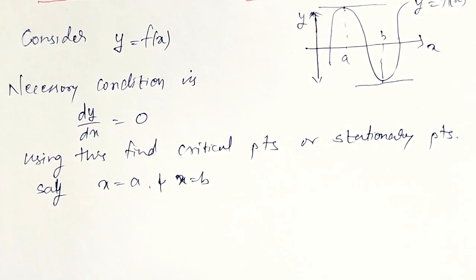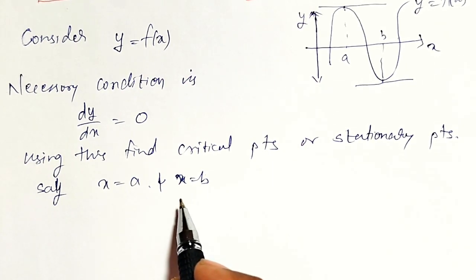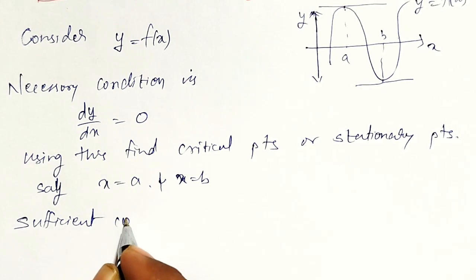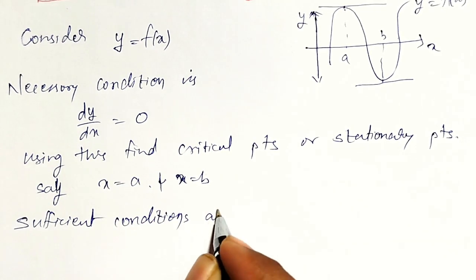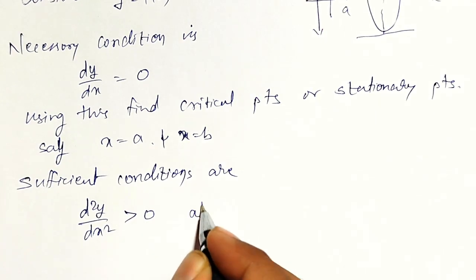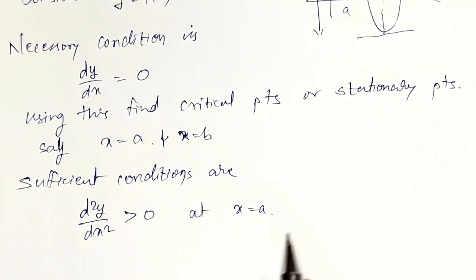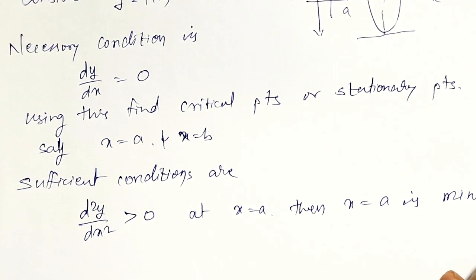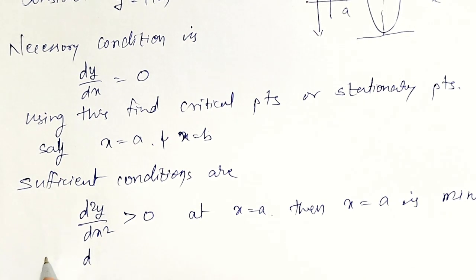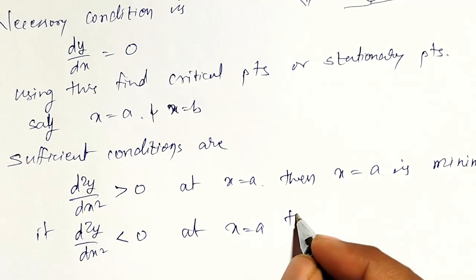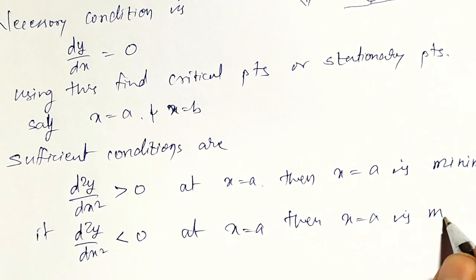Then, to decide whether the point x equal to a or x equal to b is a maximum point or minimum point, we use the sufficient conditions. The sufficient conditions are: if d square y by dx square is greater than 0 at x equal to a, then x equal to a is a minimum point. If d square y by dx square is less than 0 at x equal to a, then x equal to a is a maximum point.